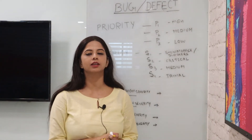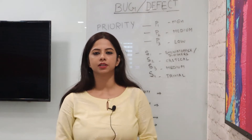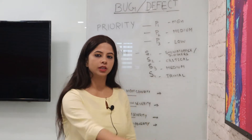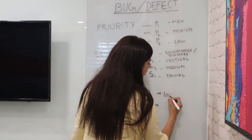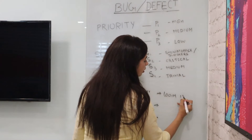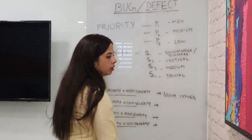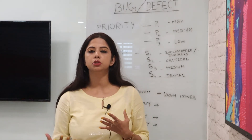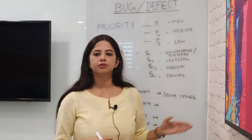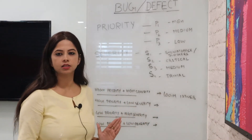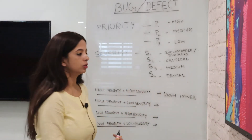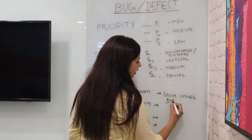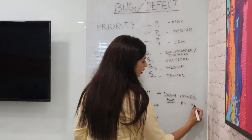Talking about high priority and high severity issues — they are very common. For example, if you aren't able to log into an application, that has to be high priority and high severity, needing to be fixed ASAP. Similarly, if the homepage of the application is entirely broken and you're not able to proceed with the application flow, those all fall into the high priority and high severity band — P1 and S1.